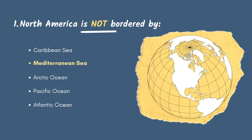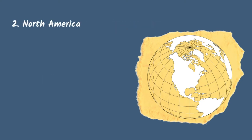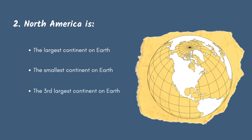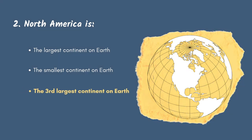Indeed, the Mediterranean Sea is located between Europe, North Africa and Western Asia. Question 2: Is North America the largest continent on Earth, the smallest continent on Earth, or the third-largest continent on Earth? North America is the third-largest continent after Asia and Africa.